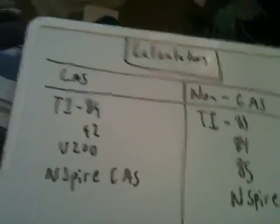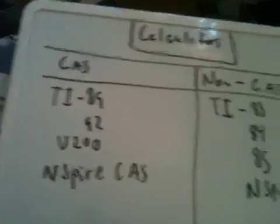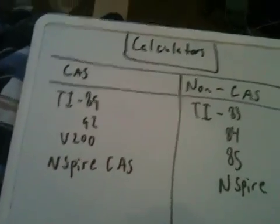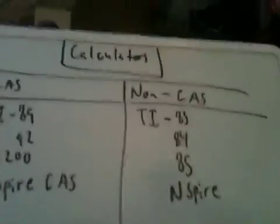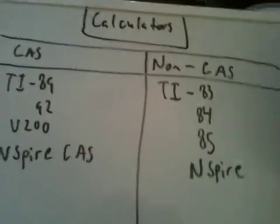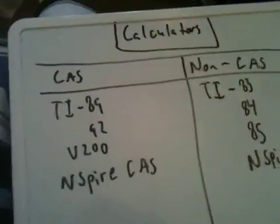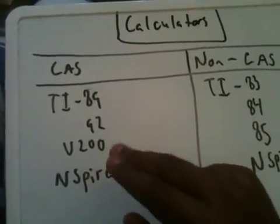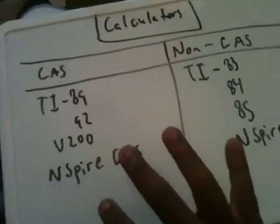Now, there are advantages and disadvantages to each type of calculator. For one, let's talk about the very first disadvantage. They're both very expensive, usually starting at $100 for 83s and 84s, and somewhere around $150 for 89 Titaniums, and a lot more for Inspires.